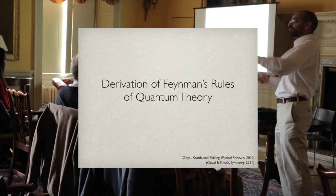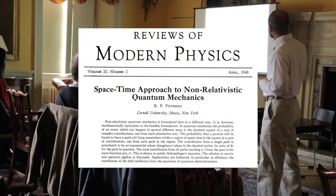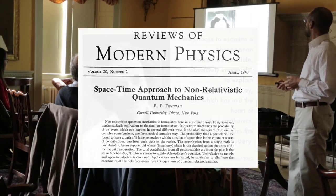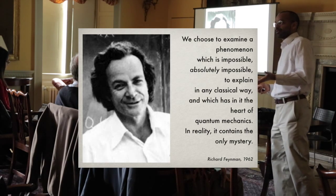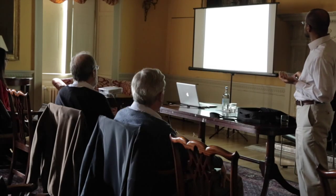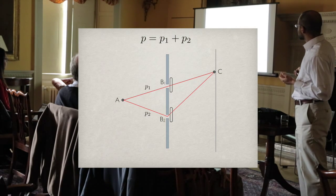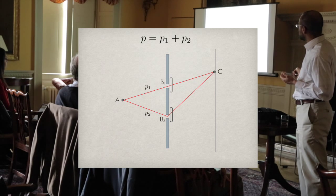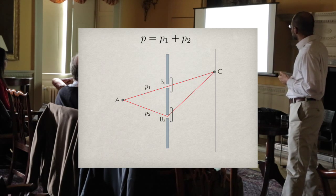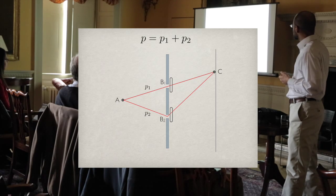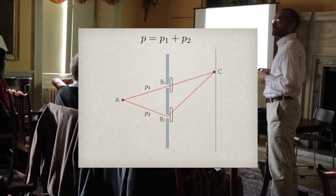This is deriving quantum theory from the point of view of Feynman's rules. Let me briefly outline them. Feynman's rules were put forward in 1948 in this paper, and they're an incredibly simple and yet computationally powerful way of representing the heart of quantum theory. Let's look at a simple example of a double-slit experiment. An electron starts at A and ends up at C. It can go through that slit or that slit.